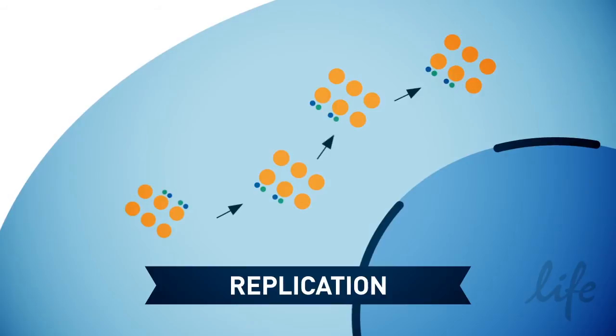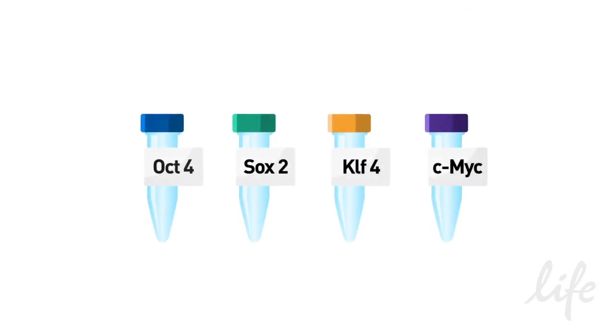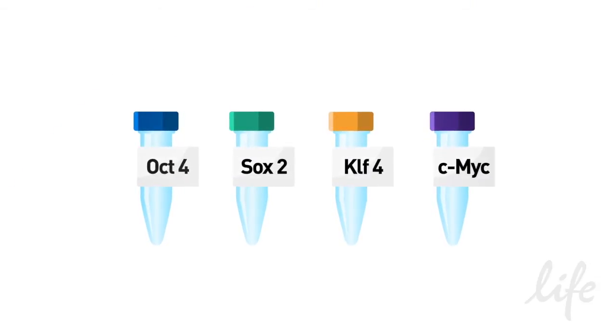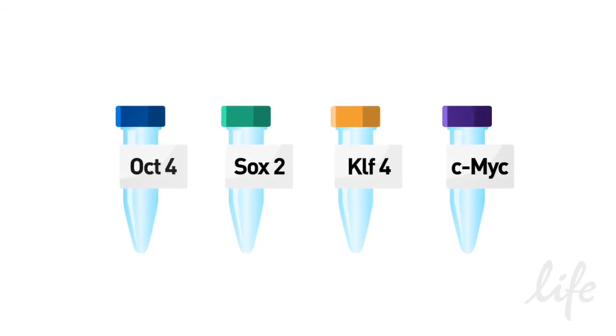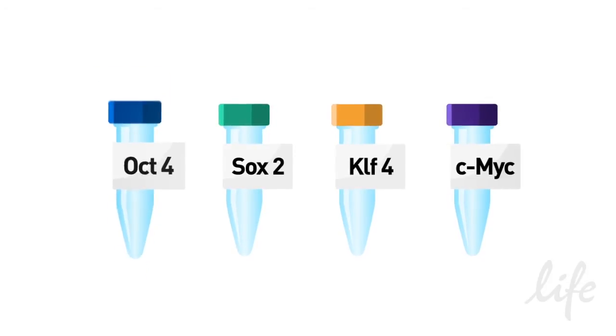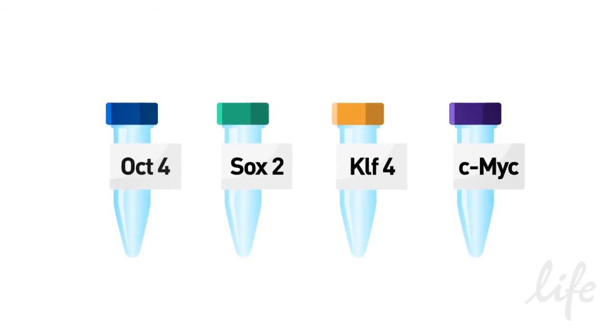Using this strategy, Sendai virus produces very high copy numbers of the target gene. The Cytotune IPS Sendai reprogramming kit contains four Sendai virus-based reprogramming vectors, each expressing one of the four Yamanaka factors: OCT4, SOX2, KLF4, and CMYK.